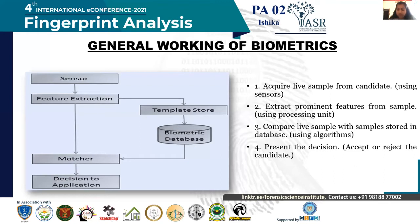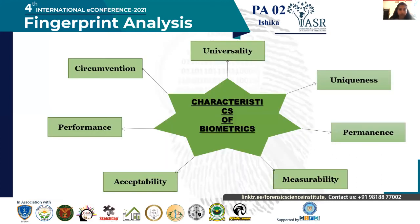A biometric system works on two basic application modes: authentication and identification. Biometric authentication compares the data from a person's characteristics to that person's biometric template to determine the resemblance. Biometric identification consists of determining the identity of a person.